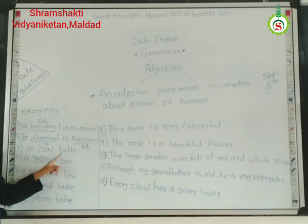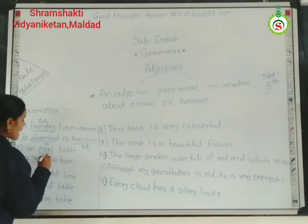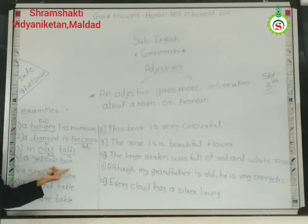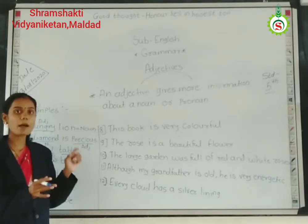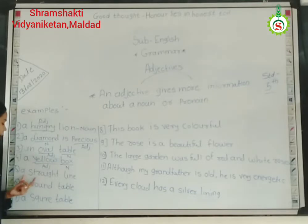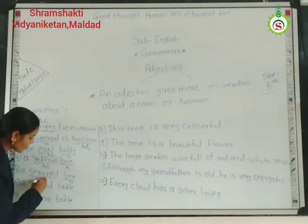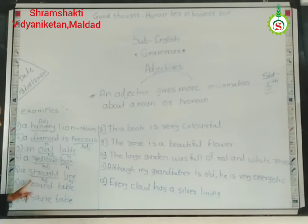Next example: 'An oval table.' How is the table? The table is not yellow, not straight, not round, but oval. So oval is the adjective and table is the noun. Then, 'a yellow box' — which color is the box? Yellow. The word yellow gives more information about box, so box is noun and yellow is adjective. Then, 'a straight line' — line is noun, but straight is adjective, because the word straight gives more information about line.